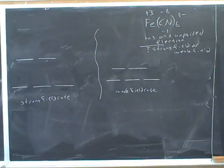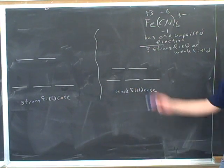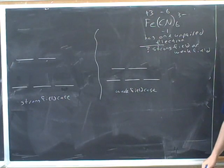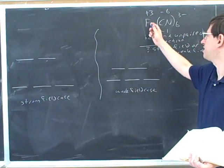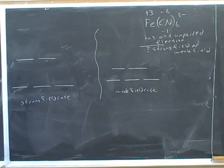Well, the way you work that out - so first of all, the key here is we need to know how many valence electrons the iron has. We need to know how many valence electrons this iron will have. So how many valence electrons will this iron have in this complex? How many valence electrons will the iron have in that complex?